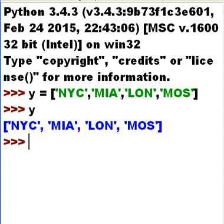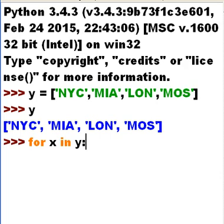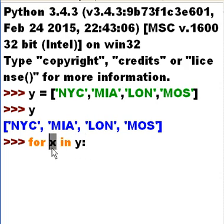So this is how we do it. For every X that's in the array called Y, colon, do the following. I'm going to put every element, one at a time — every element within Y — I'm going to put that one at a time into X.